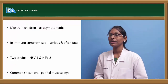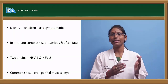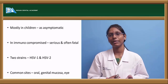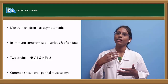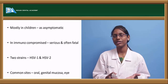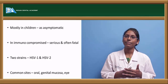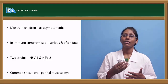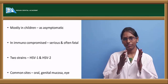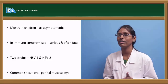Herpes simplex virus is most commonly seen in children, but usually takes a less aggressive form and is most often asymptomatic. When infection occurs in adults — especially in immunocompromised patients — it takes a very aggressive phase. In HIV or AIDS patients, HSV takes a serious and often fatal phase.